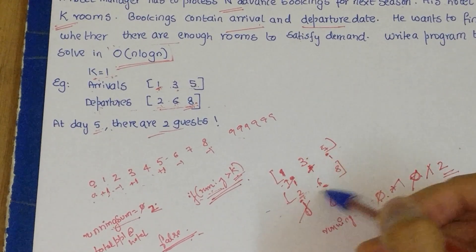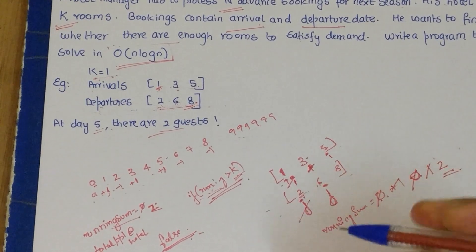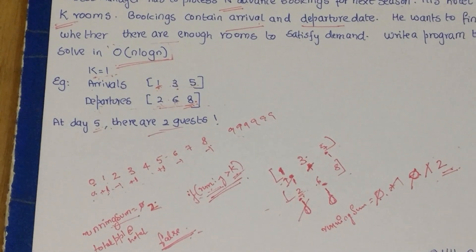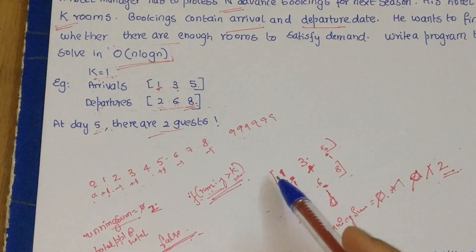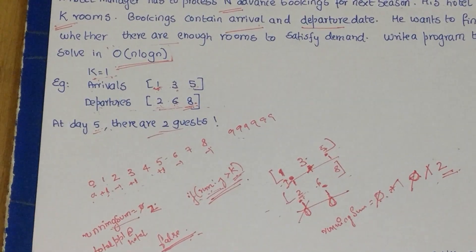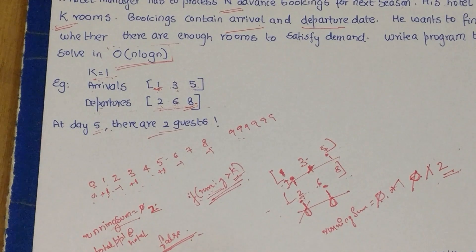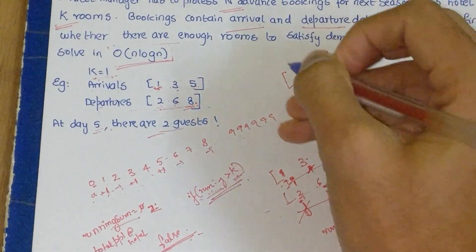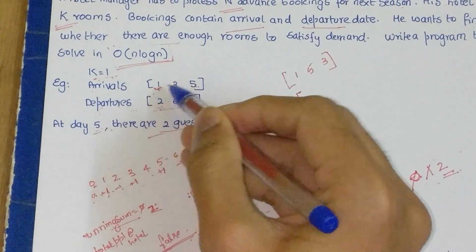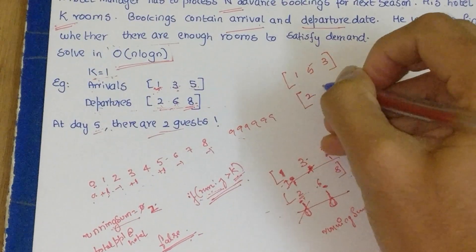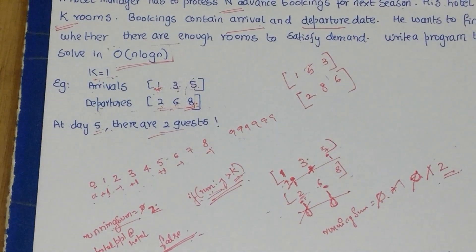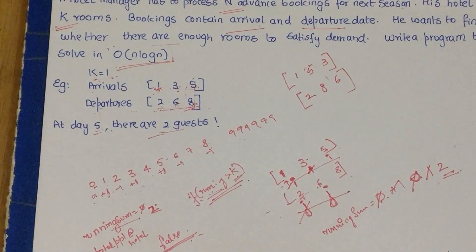This approach assumes the arrays are sorted. But what if the arrival and departure dates are given in an unsorted manner? For example, arrivals as [1, 5, 3] and departures as [2, 8, 6] — the pairs are the same (5 corresponds to 8, etc.) but not in sorted order. Then how would we solve that?